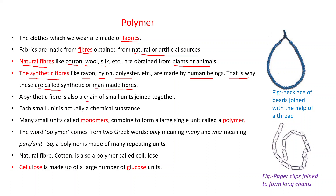A synthetic fiber is also a chain of small units joined together, and each small unit is actually a chemical substance. These small units are called monomers. When these monomers combine to form a large single unit, then this large single unit is called a polymer. Small units are known as monomers; when these combine and form a large single unit, that large single unit is known as polymer.